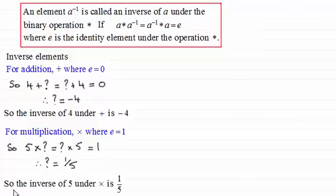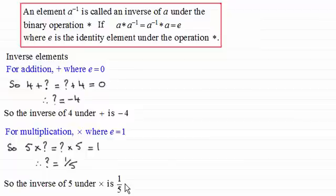The inverse of 5 under multiplication is 1 fifth. If we had any real number a, its inverse would be 1 over a — except you couldn't have 0, because 1 divided by 0 is undefined. So 0 has no inverse.